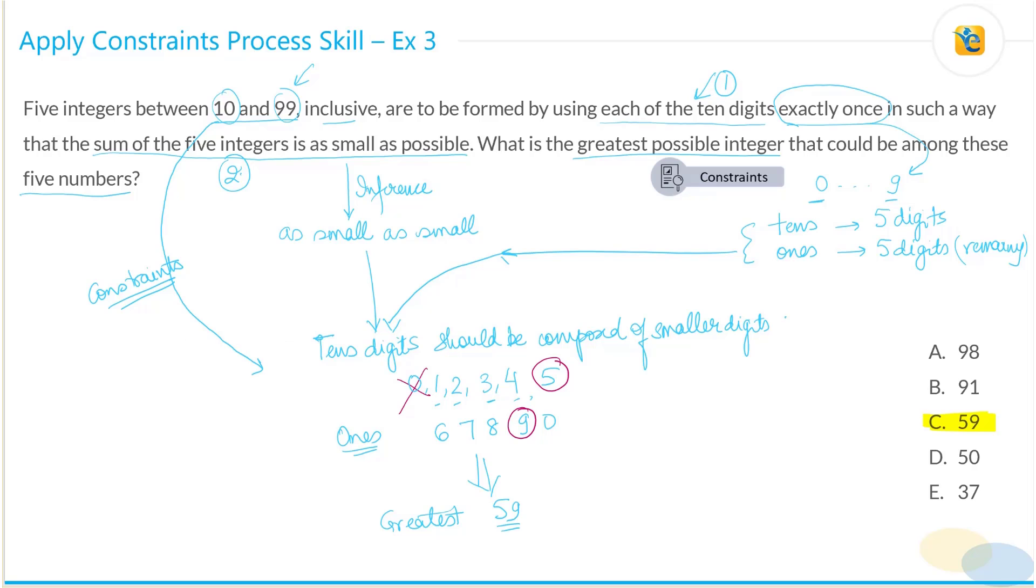Let's look at this part. The constraint that it has to be a number that has a tens digit and the five integers are between 10 and 99. So you need to have a tens digit, which means that you cannot have zero in the tens place. And then the sum of five integers need to be as small as possible.